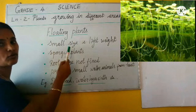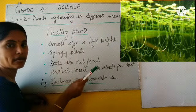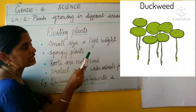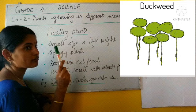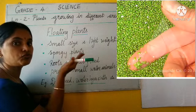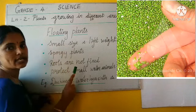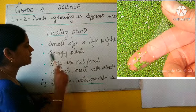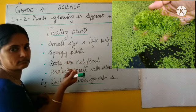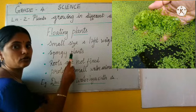Floating plants — look at this plant. This is what we call duckweed, and it is a floating plant. How is it possible to float on water? The leaf and stem of this plant have some empty, air-filled space. That's why these plants are able to float on water. This plant is small in size and light in weight, and its leaves are very spongy in nature — filled with air spaces.